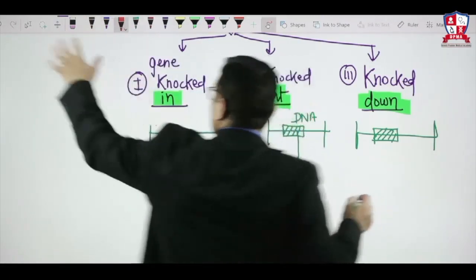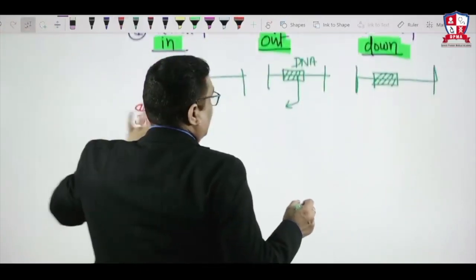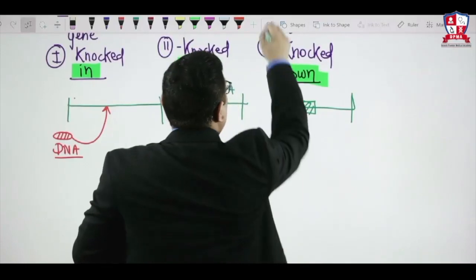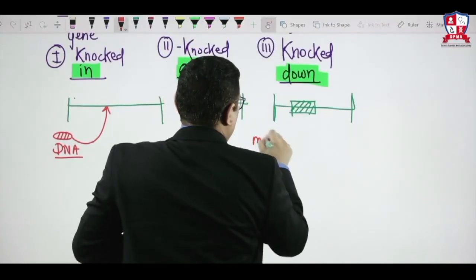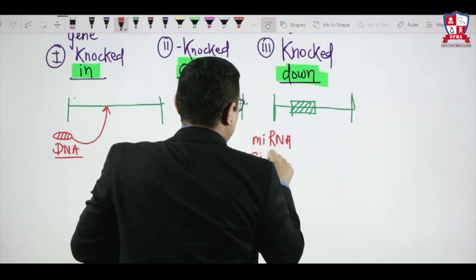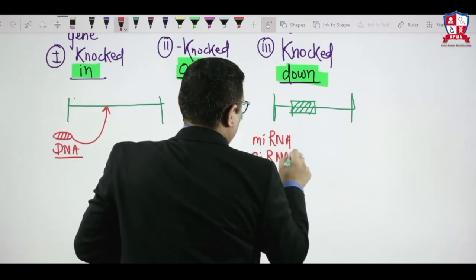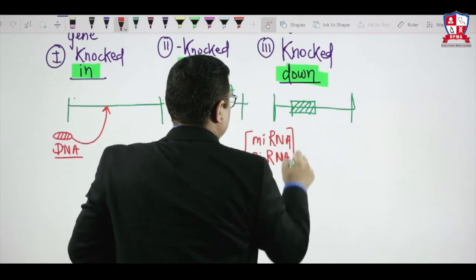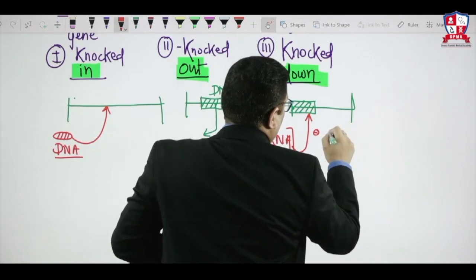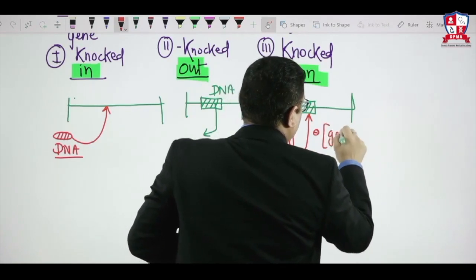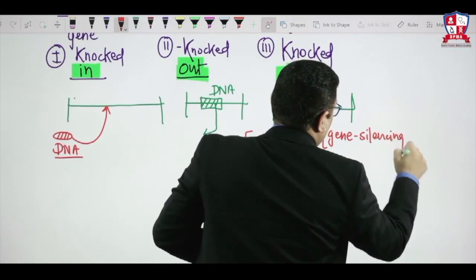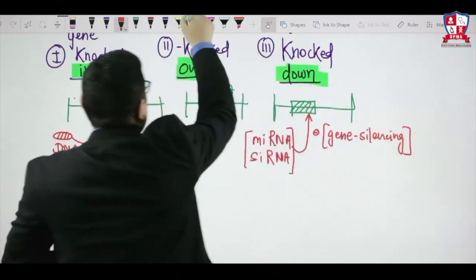Knocked Down means when you are adding microRNA or siRNA. MicroRNA or siRNA is causing gene silencing. They are inhibiting them, which is also called gene silencing. This gene silencing is called Knocked Down.